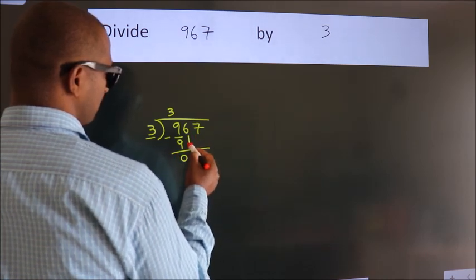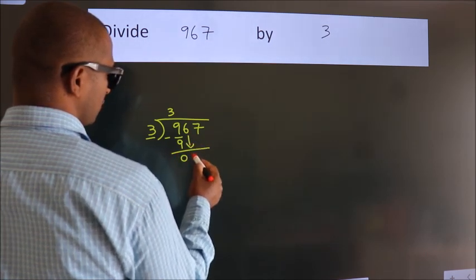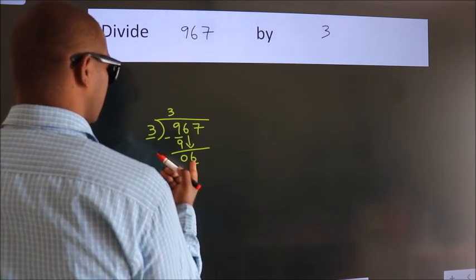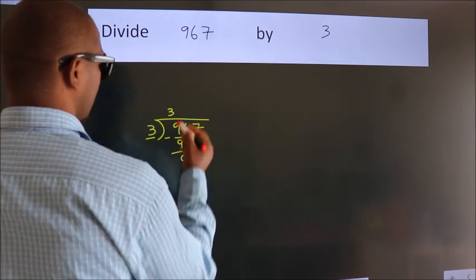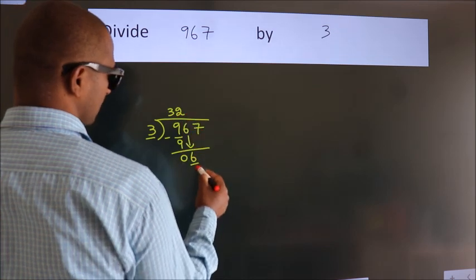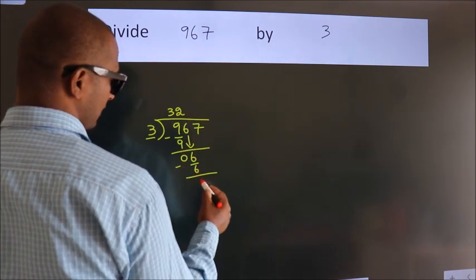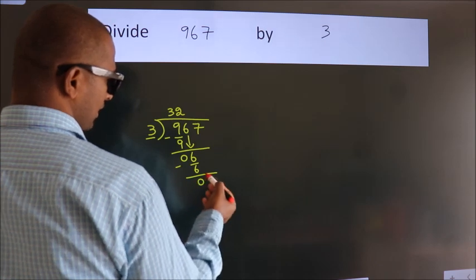After this, bring down the beside number. So, 6 down. So, 6. When do we get 6? In 3 table. 3 2s, 6. Now, we subtract. We get 0.